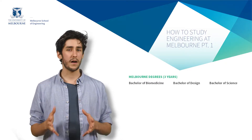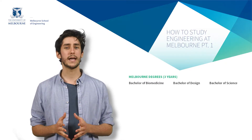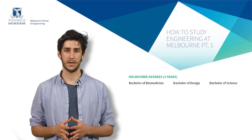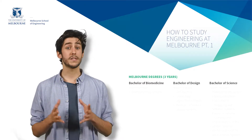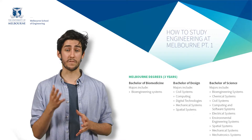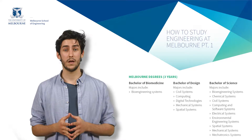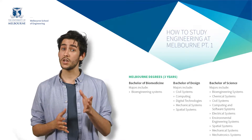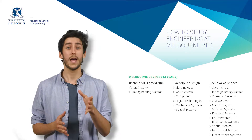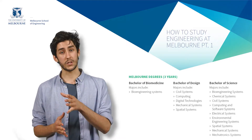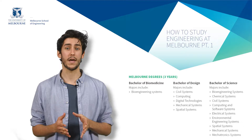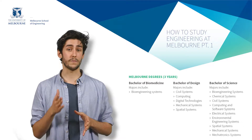Each pathway degree contains a different selection of engineering majors. You can study a major in Bioengineering in the Bachelor of Biomedicine. You can choose between a major in Civil Systems, Computing, Digital Technologies, Mechanical Systems, or Spatial Systems in the Bachelor of Design.